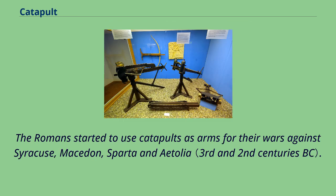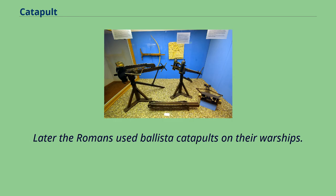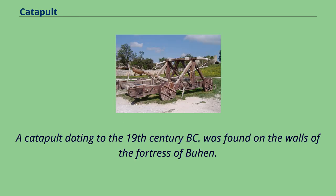The Romans started to use catapults as arms for their wars against Syracuse, Macedon, Sparta, and Aetolia. The Roman machine known as an arcuballista was similar to a large crossbow. Later, the Romans used ballista catapults on their warships. A catapult dating to the 19th century BC was found on the walls of the fortress of Bun.